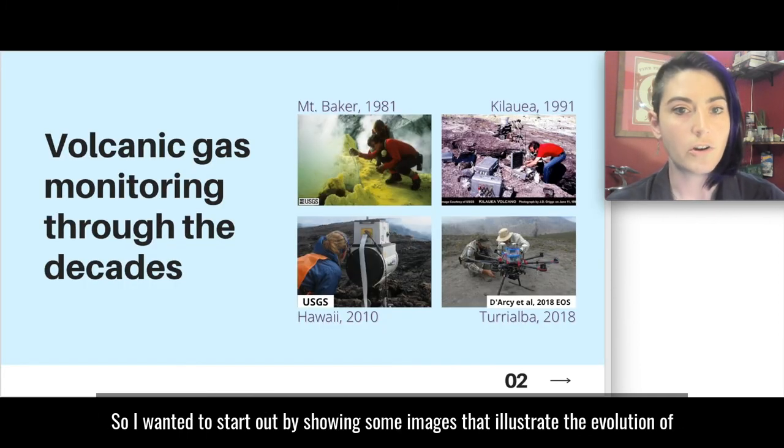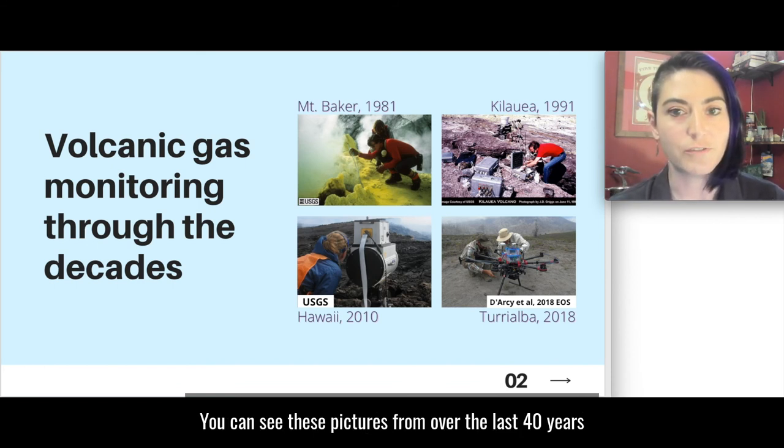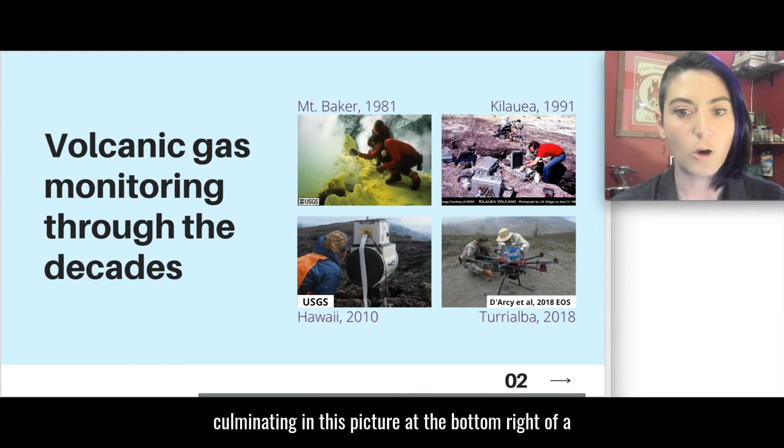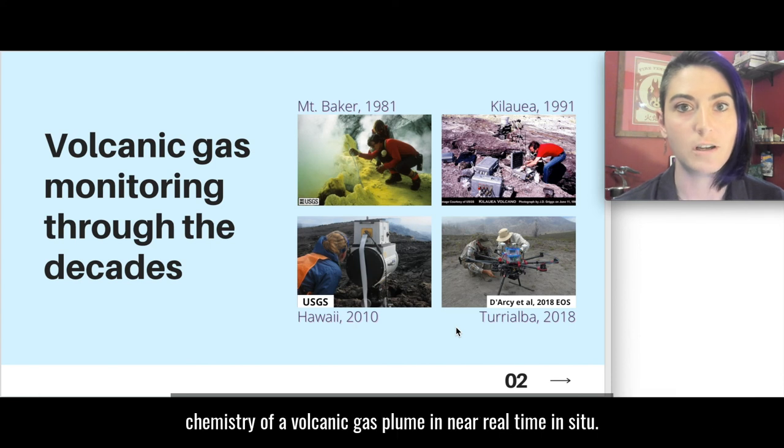So I wanted to start out by showing some images that illustrate the evolution of volcanic gas monitoring techniques throughout the decades. You can see these pictures from over the last 40 years, culminating in this picture at the bottom right of a drone on the flanks of Torriaba volcano in Costa Rica being outfitted with sensors to measure the chemistry of a volcanic gas plume in near real time in situ.